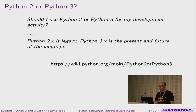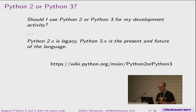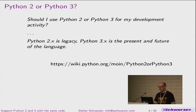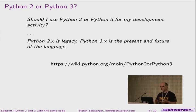Python 2 or Python 3 — most in the audience will have read this. This is from the Python website. When you go to the download section, there's a link 'Python 2 or Python 3', and this is the wiki page you get when you click on that link. It says Python 2 is legacy.